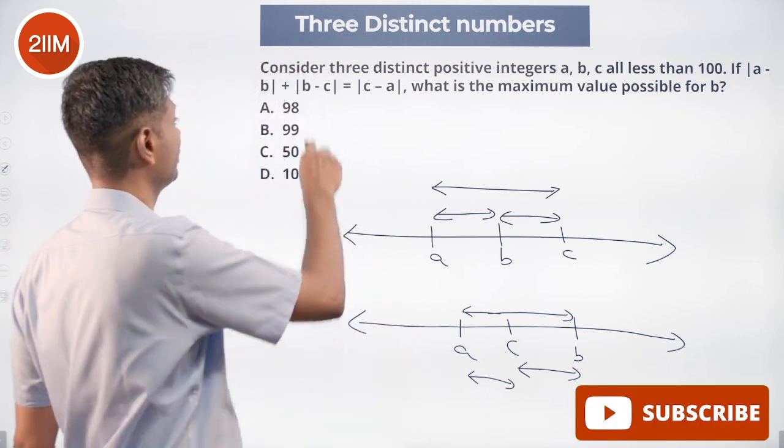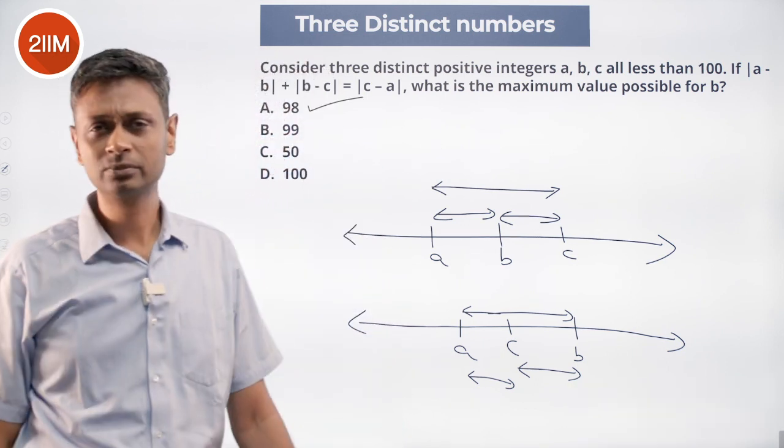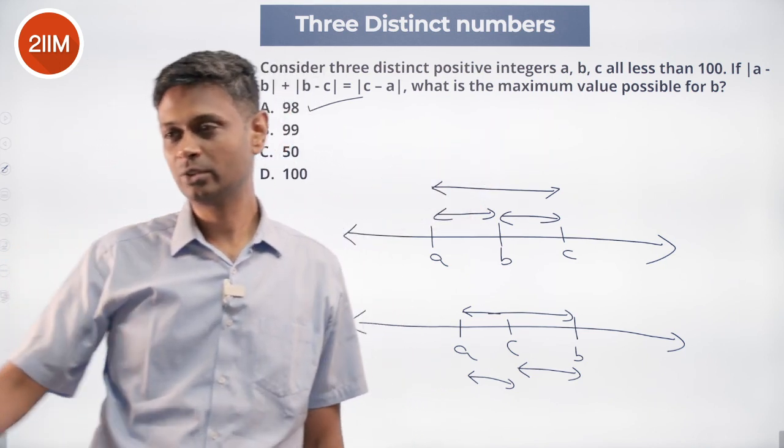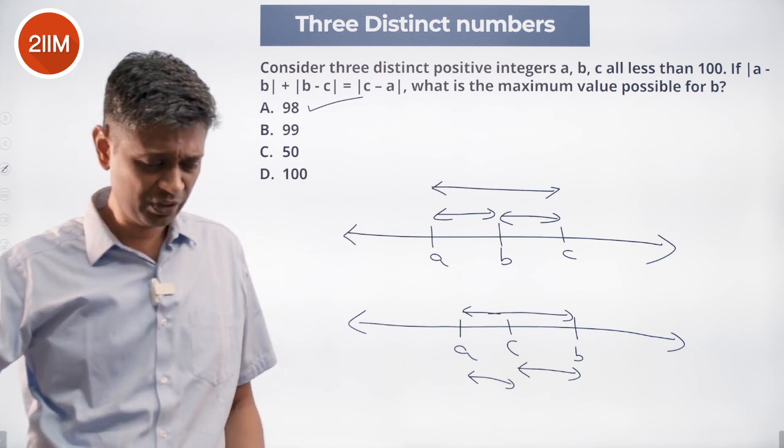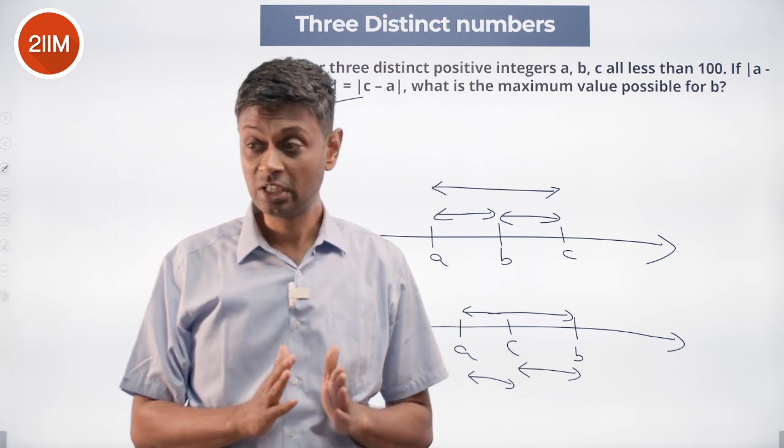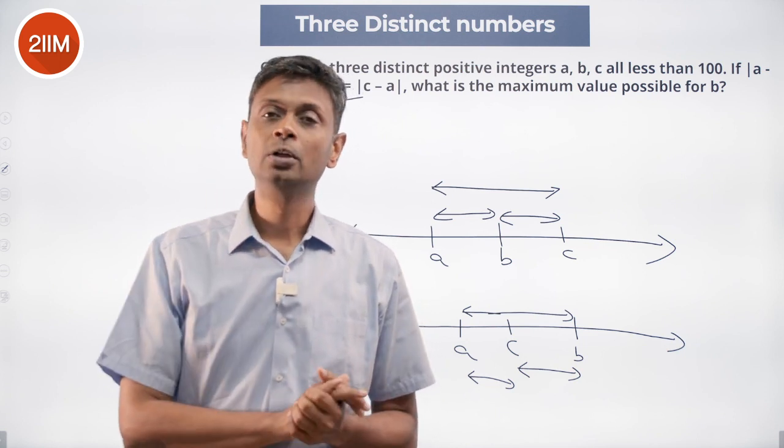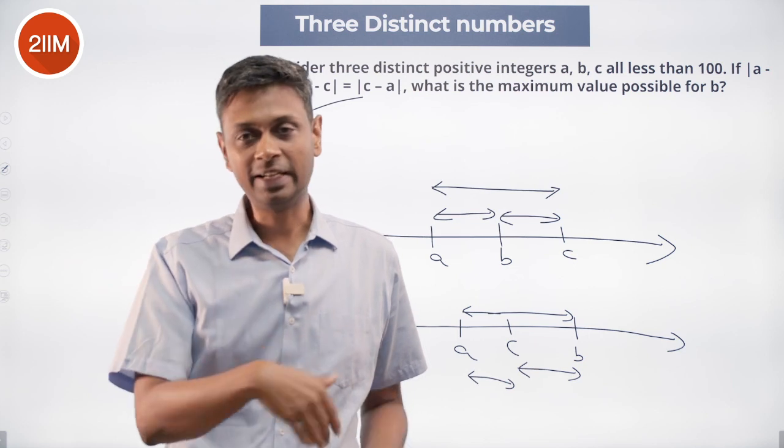Three distinct positive integers all less than 100, and we are looking at three positive integers all less than 100, distinct. And we know that b is the number in between. So b cannot be 99. The highest b can take is 98.